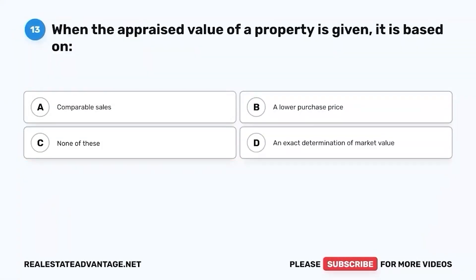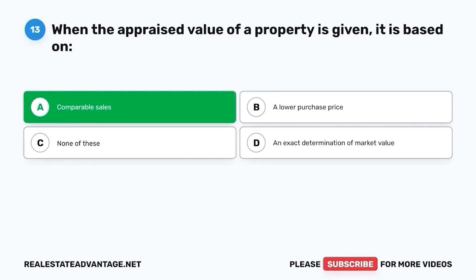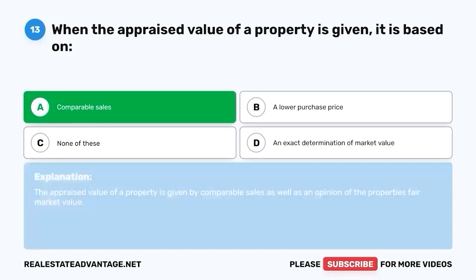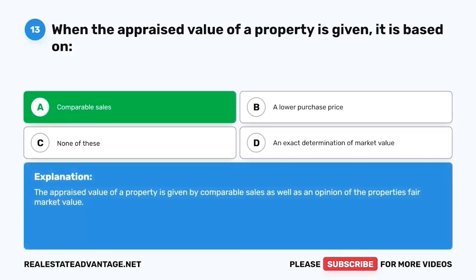Question 13. When the appraised value of a property is given, it is based on: A. Comparable sales. B. A lower purchase price. C. None of these. D. An exact determination of market value. The correct answer is A. Comparable sales. The appraised value of a property is given by comparable sales, as well as an opinion of the property's fair market value.